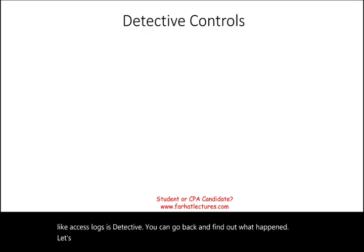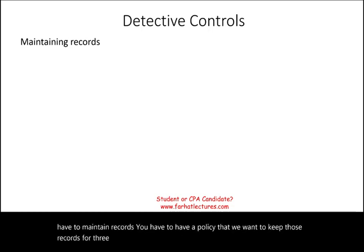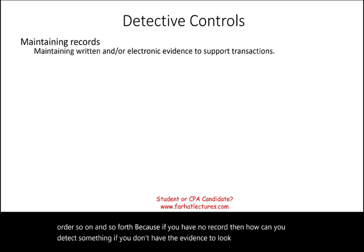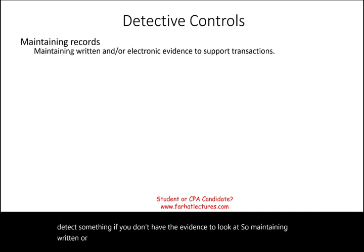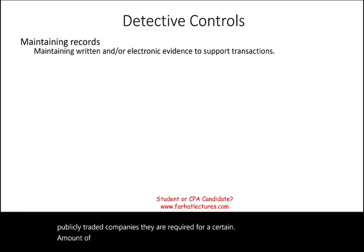Let's talk about detective controls. The first is maintaining records — you have to have a policy to keep records for three, five, or seven years: emails, documents, purchase orders, sales orders, and so forth. If you have no records, how can you detect something if you don't have evidence to look at? Maintaining written or electronic evidence to support transactions is essential, and for publicly traded companies, there are legal requirements for how long records must be kept.